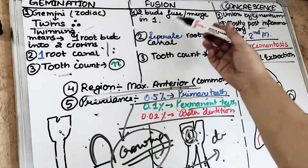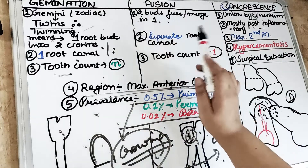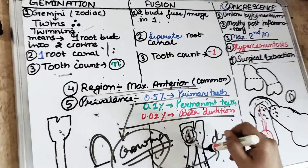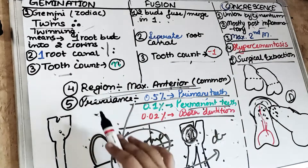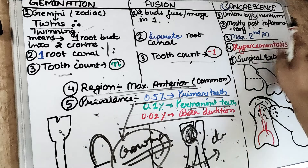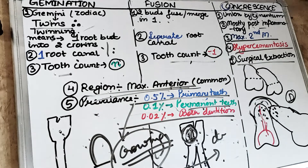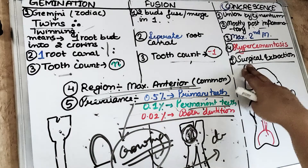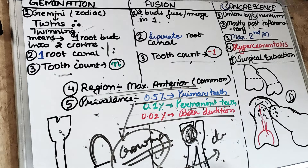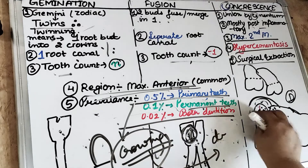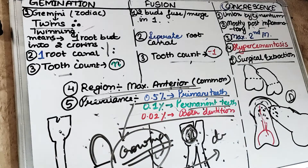For fusion: two teeth fuse to form one, with separate canals for both teeth, and tooth count is reduced by one if counted as a single tooth. For concrescence, remember: C for concrescence, C for cementum — it is union by cementum. Mostly post-inflammatory; the maxillary second molar is most commonly involved when there is a large pulpal exposure and the roots of the third molar are lying closer — usually in case of horizontal or distoangular impaction.